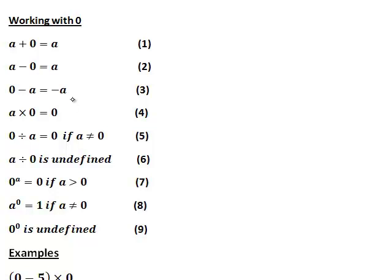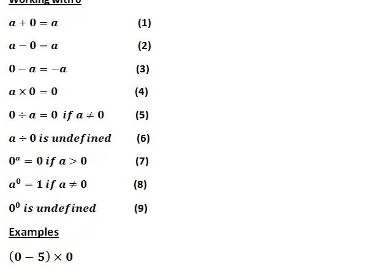Let's apply this to a first example. If we wanted to work out (0 minus 5) times 0, which properties would be useful here? We need to work out the brackets first. The first useful property is property 3, that 0 minus a number is the negative of the number. So 0 minus 5 is negative 5, and that is still multiplied by 0. This is now of the form a times 0, which from property 4 is just 0.